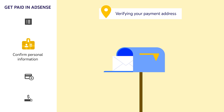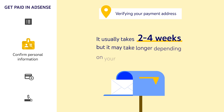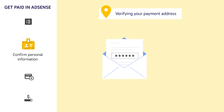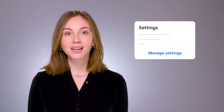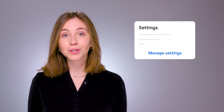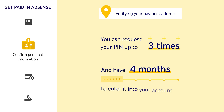Once you reach that threshold, we'll mail you a six-digit personal identification number, also called a PIN. It usually takes two to four weeks for your PIN to arrive to your payment address, but it may take longer depending on your location. Once your PIN arrives, you'll need to enter it into your AdSense account by going to Payments, then Verification Check. If your PIN doesn't arrive after four weeks, make sure your account information, including your payment address, is correct. You can make changes if needed by going to Payments, then Settings. If all your information is correct and your PIN still hasn't arrived, you can request for it to be sent again by going to AdSense, then Payments, then Verification Check. You can request your PIN up to three times, and have four months from the date your PIN is generated to enter it into your account.